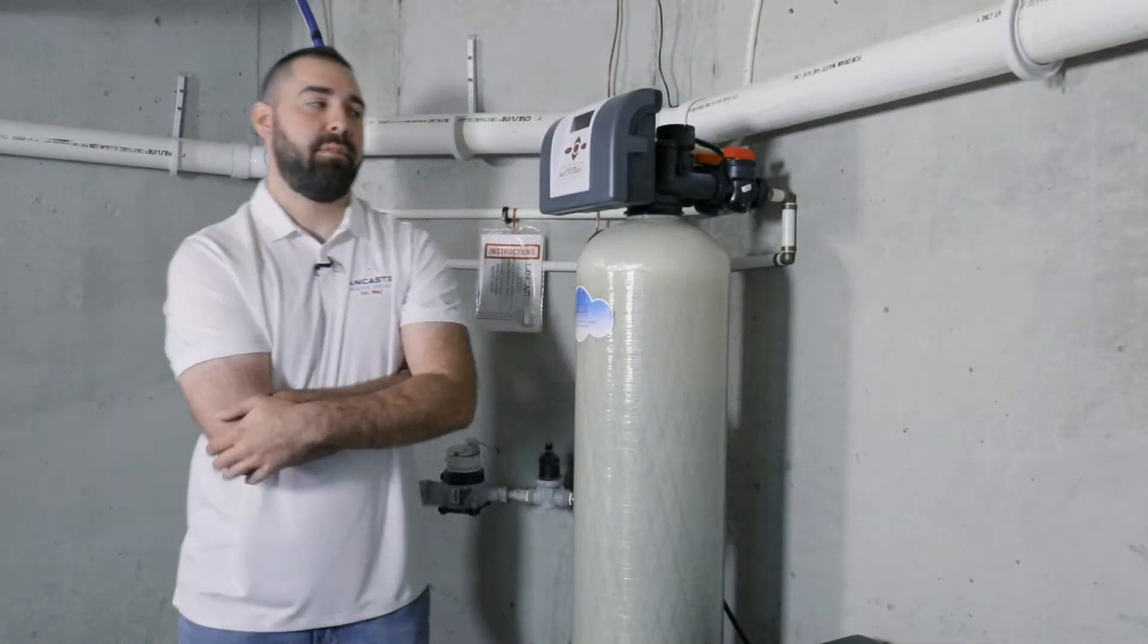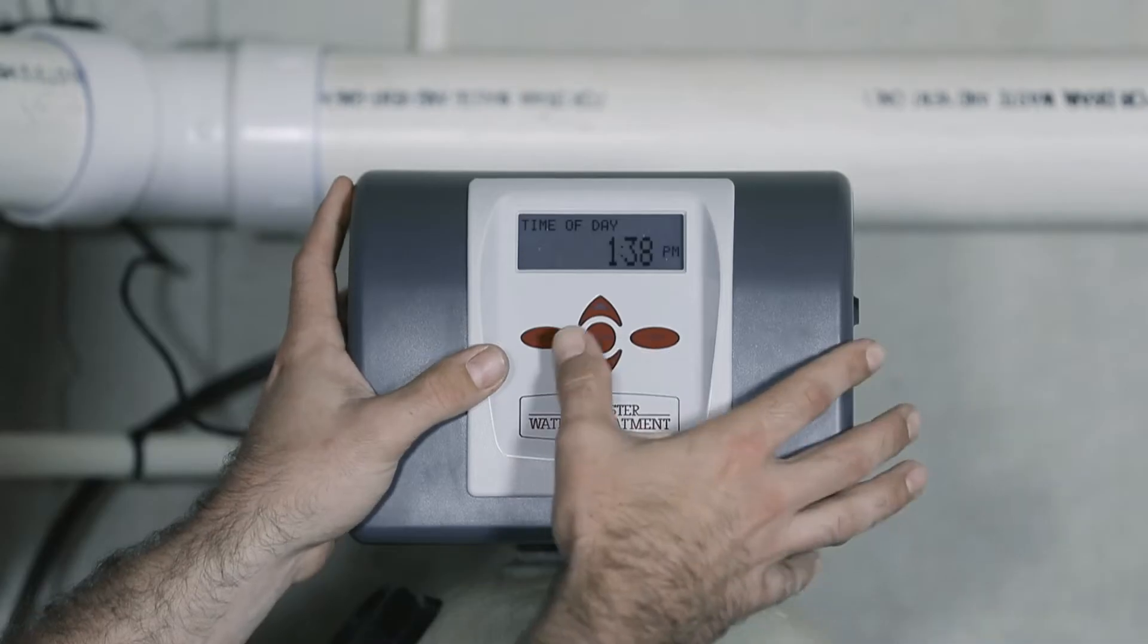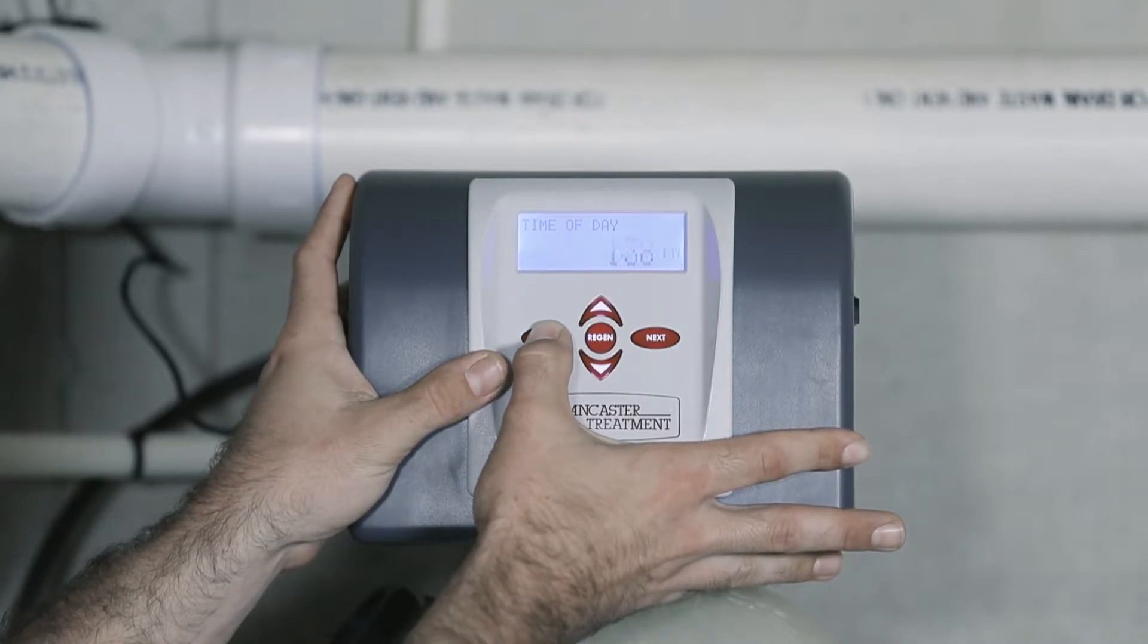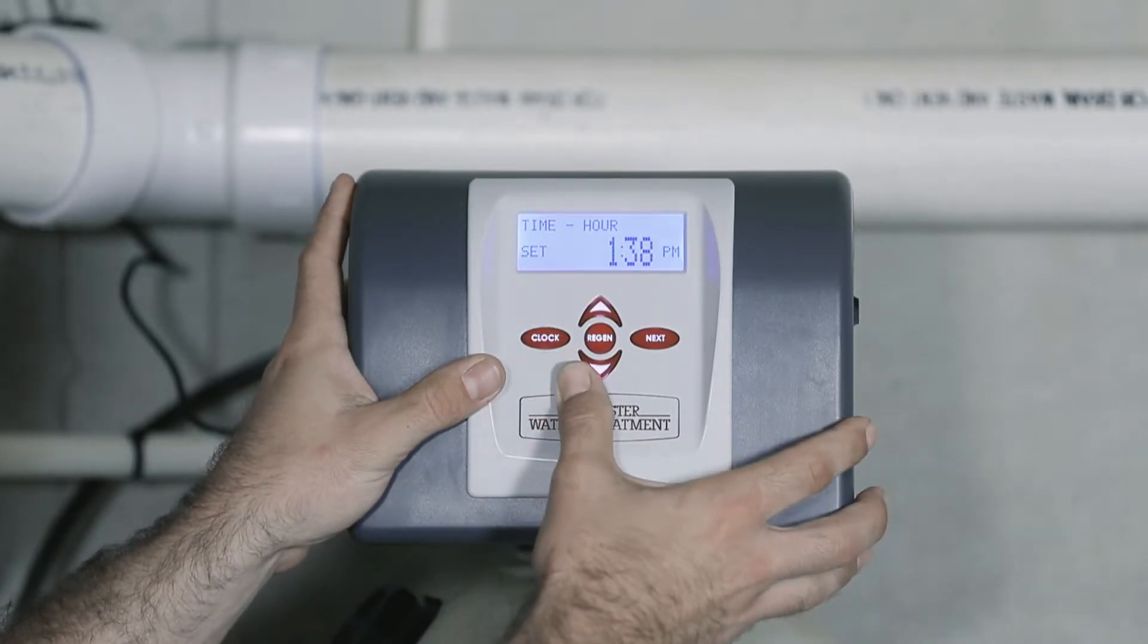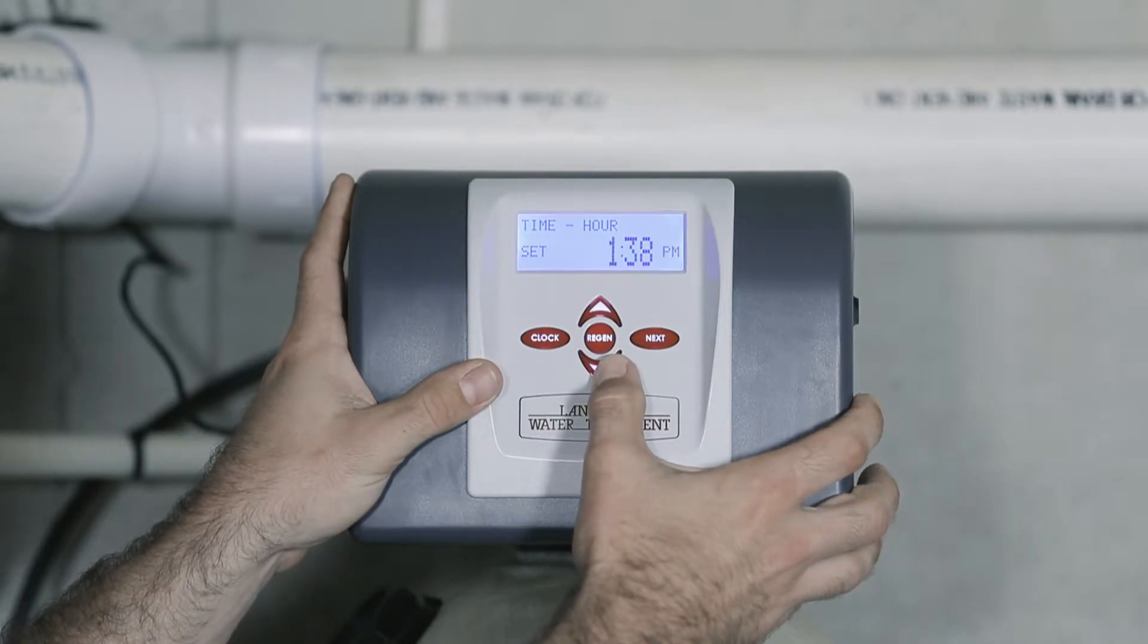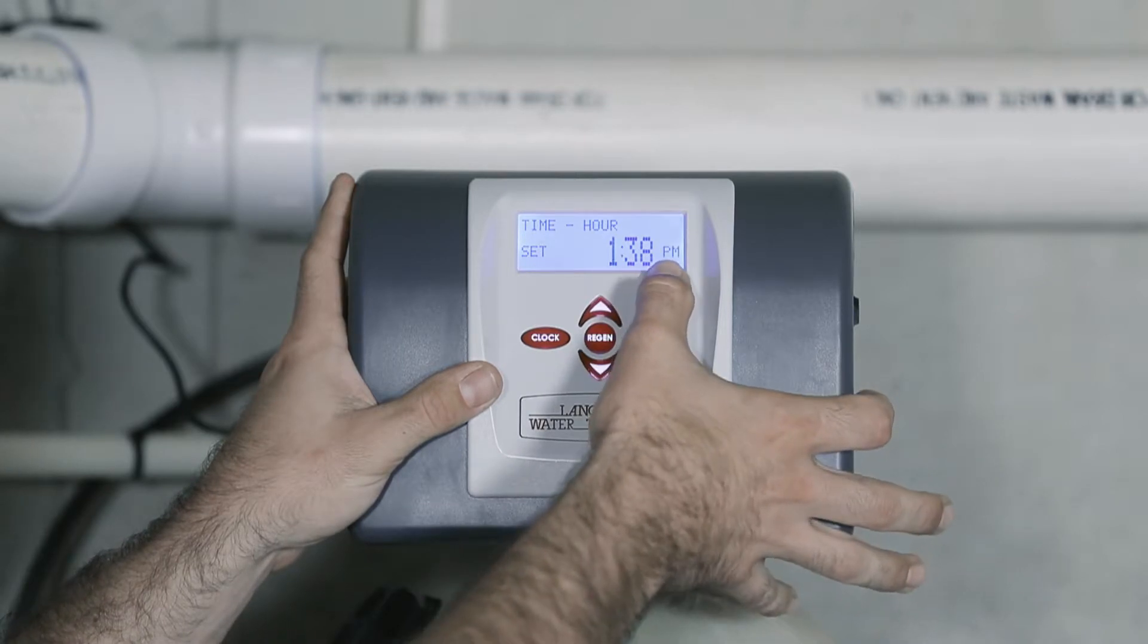To begin we'll do the time of day. First press and hold the clock button. The hour will start flashing. You can then use your up and down arrows to change the current hour. Please pay attention to the AM and PM flashing.